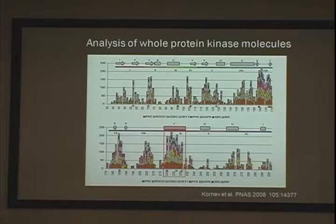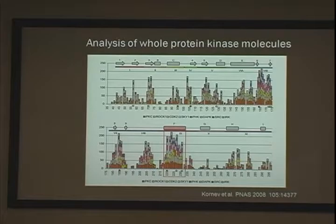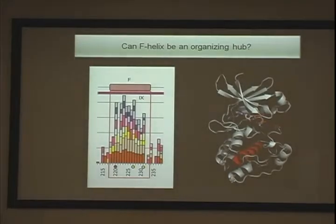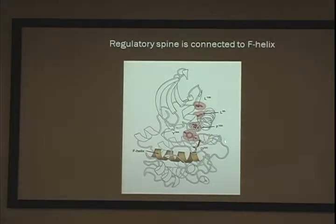So we looked at the whole core of protein kinases. The approach was the same: we took all active forms of PKA, compared it to four different families including tyrosine kinases, and plotted their scores. If all colors are present for a residue, it means that residue has a very high score in all comparisons. It was striking that the F-helix turned out to be number one. Only the activation loop can compete with it in terms of scores. The F-helix is pretty interesting — it sits in the middle of the hydrophobic core of the C-lobe. We thought: can the F-helix be an organizing hub for all the structures? This is the basement for the house. The good news was that there is G220, conserved in all kinases, that binds the base of the regulatory spine.